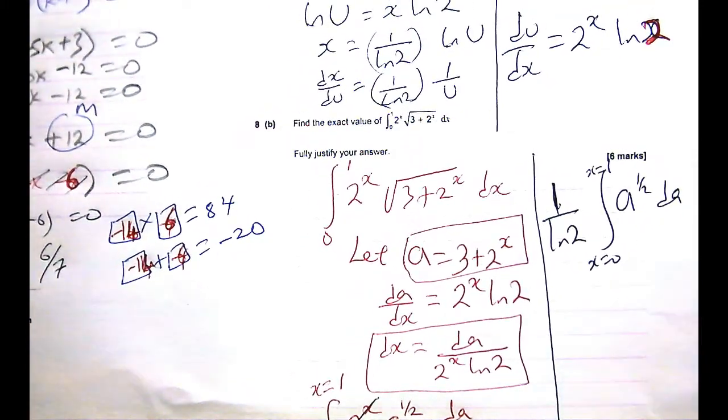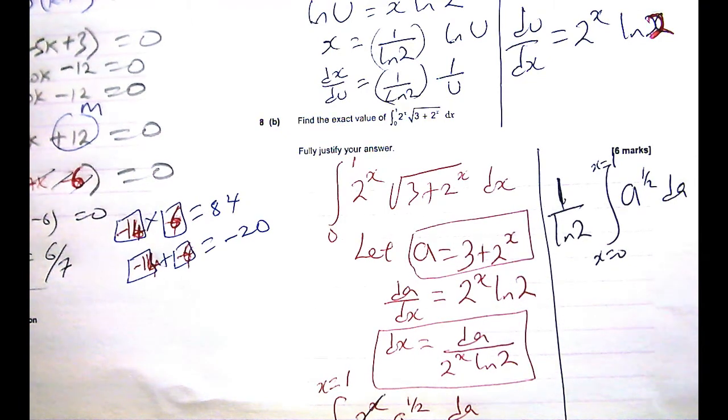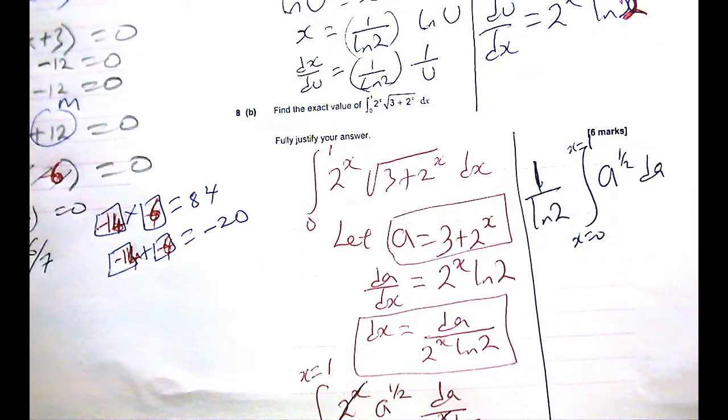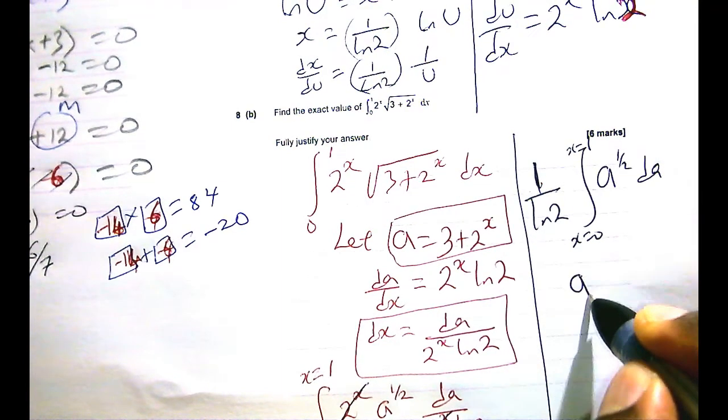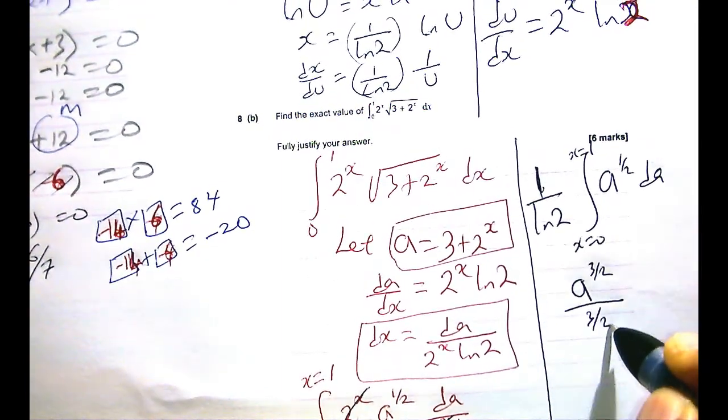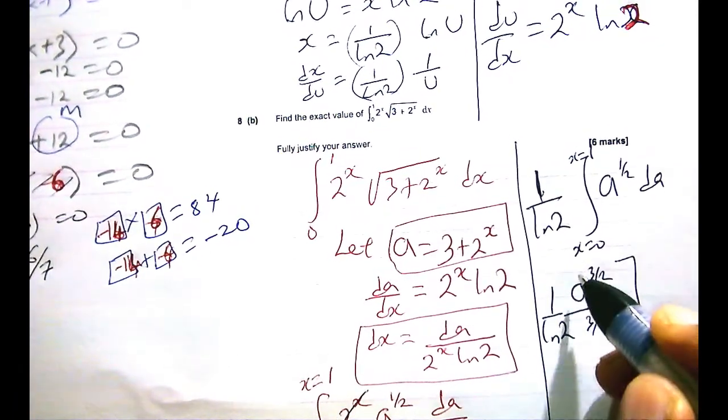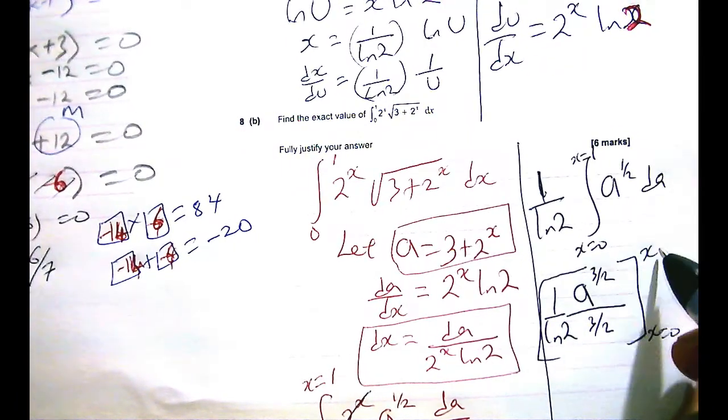So we now have, so this can be rewritten as 1 over lin 2 integral from x equals 0 to x equals 1, okay, A to the half. And when you integrate A to the half, you get A to the half, you add 1 to the power, and divide by the new power. So when you add 1 to half, you get 3 over 2, right? Or 1.5. So that is A to the 3 over 2 divided by the new power. And don't forget, you still have 1 over lin 2 there. And you need to substitute for when x is 0 to when x is 1.